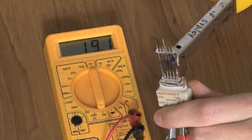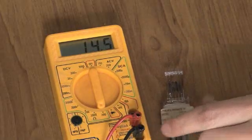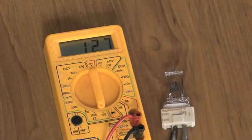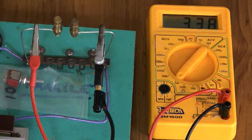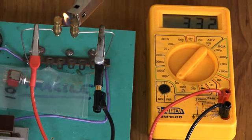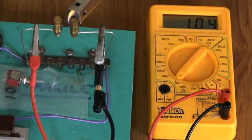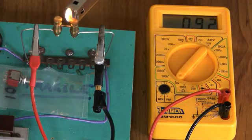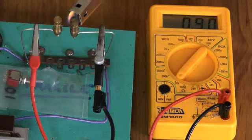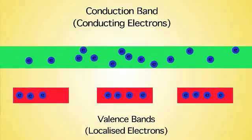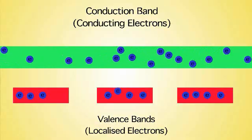Now, for the semiconductor, we're going to be using a germanium rod. You can see here that the resistance is initially quite high. However, as we heat it up, the resistance reduces. This is because we're supplying the electrons with enough energy to cross the energy gap from the valence band into the conduction band.